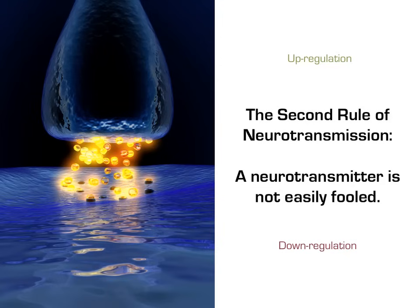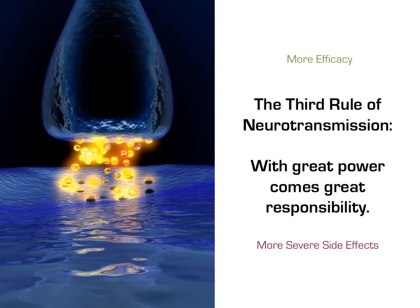There are additional mechanisms involving G-proteins and DNA regulation, but those are beyond the scope of this lecture for now. The third and final rule of neurotransmission is: with great power comes great responsibility. What I mean by this is that the efficacy of a treatment is often intrinsically linked to how powerful an agent it is. Unfortunately, the most powerful drugs tend to have the most severe and dangerous side effects. Because of this, we can't always use the big guns right off the bat. It's best to always attempt to treat with the least powerful option that will still produce good results.